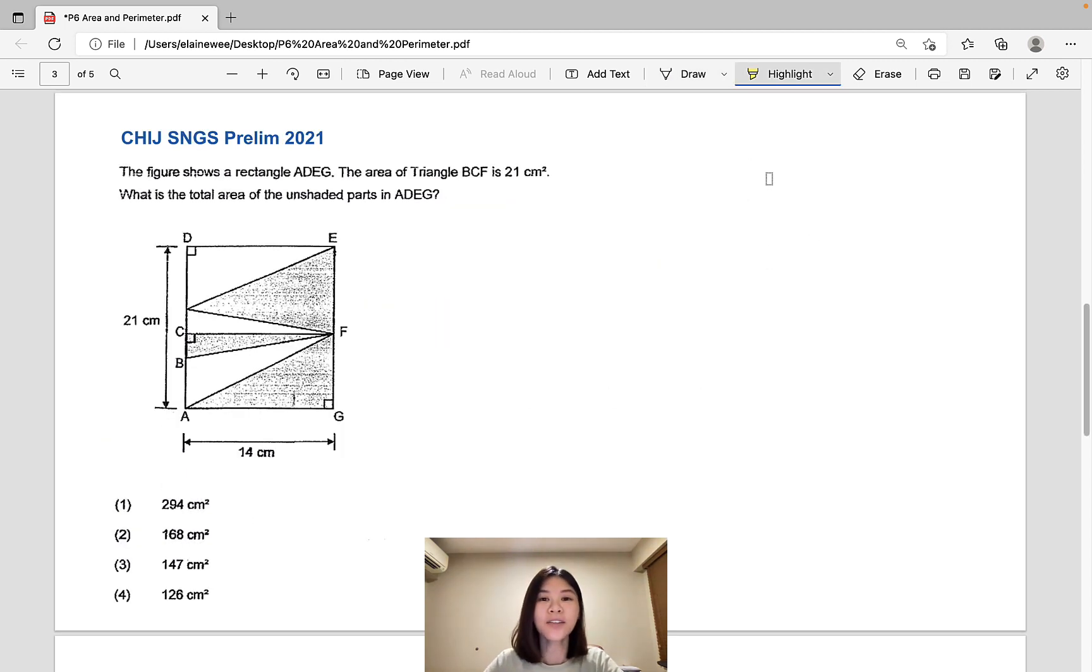Let's take a look at the third question from CHIJ St. Nicholas Girls School. The figure shows a rectangle ADEG. The area of triangle BCF, which is this small triangle over here, is 21 square centimeters. What is the total area of the unshaded parts in ADEG? So unshaded parts would mean this, this and this.